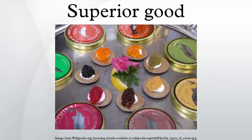The prestige value of some superior goods is so high that a price decline would lower demand. These are the fabled Veblen goods. The income elasticity of a superior good is above one by definition, because it raises the expenditure share as income rises.